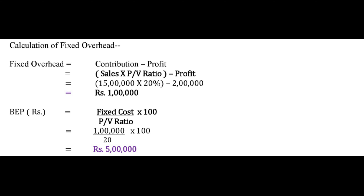We have calculated the PV Ratio, but in this question, the Fixed Cost is not given. So we must calculate Fixed Cost first. The formula for Fixed Cost is: Contribution minus Profit. By subtracting profit from contribution, we can calculate fixed cost. The formula to calculate Contribution is: Sales × PV Ratio. Taking Period 2 as the base, Sales = ₹15,00,000 × 20% PV Ratio, giving Contribution = ₹3,00,000. Subtracting Period 2 profit of ₹2,00,000, Fixed Cost = ₹1,00,000. Note: whichever year's sales we use, we must use that same year's profit to calculate fixed cost.